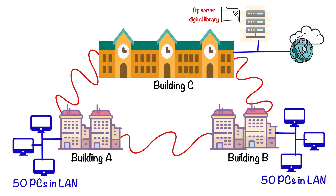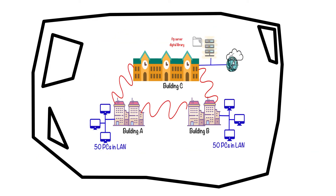However, the campus area network also has its limitations. You cannot form a campus area network where one building is in one city and another building is in a different city — that would be a different type of network. To form a campus area network, the buildings should face each other or be inside the same geographical location. Originally, the campus area network belonged to schools, universities, and colleges.